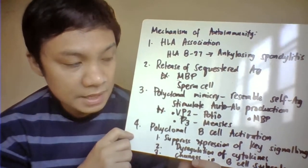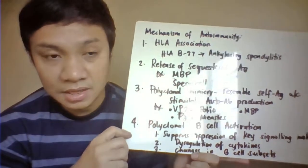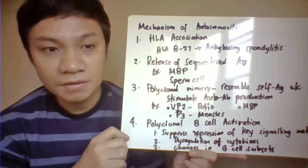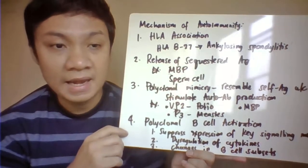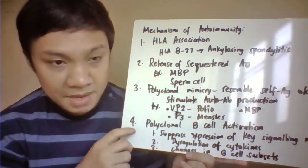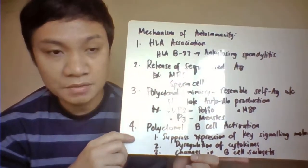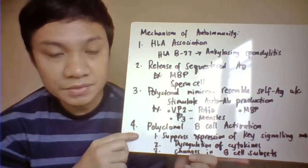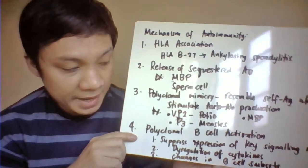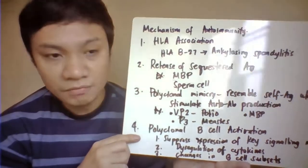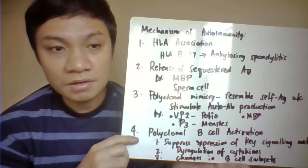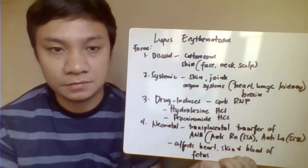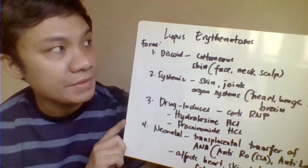The fourth mechanism is polyclonal B cell activation, which involves defects in B cells resulting in the production of abnormal antibodies. This may occur because of suppression of key signaling molecules, dysregulation in cytokine production, or changes in B cell subset populations.